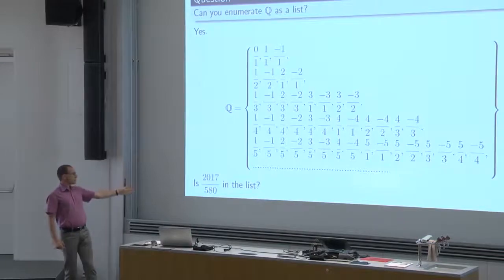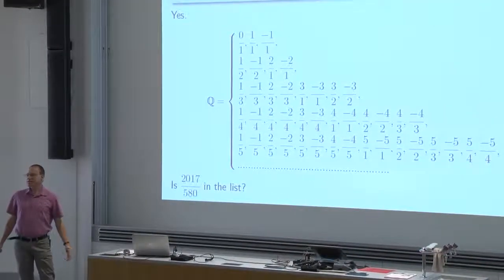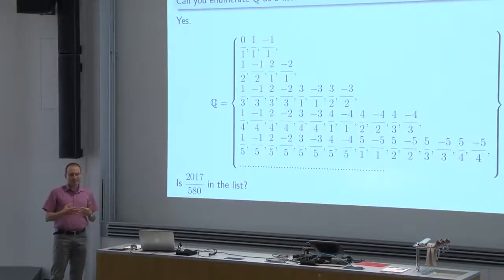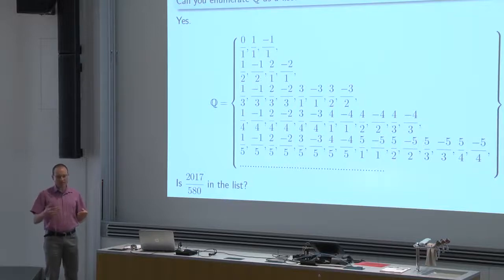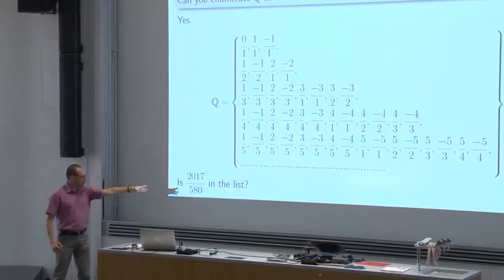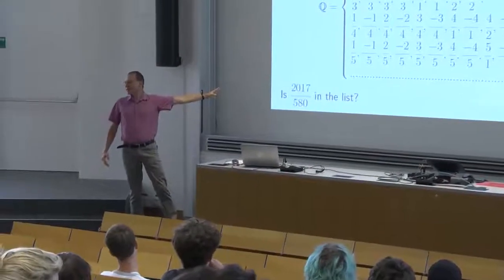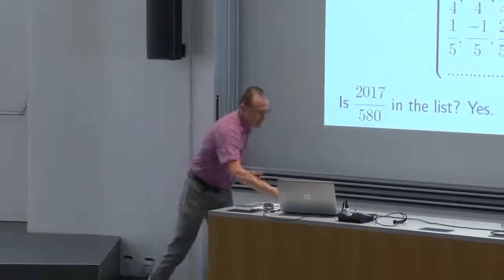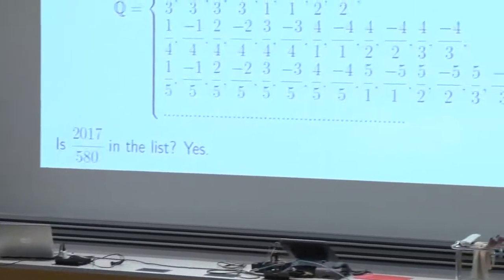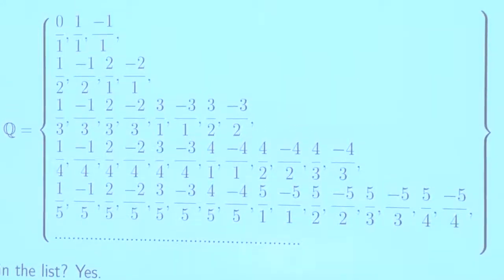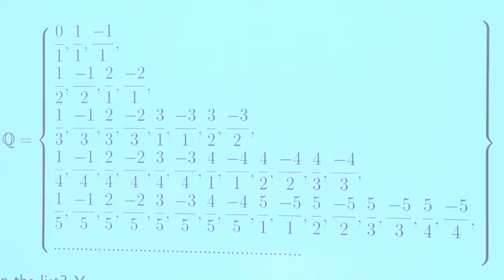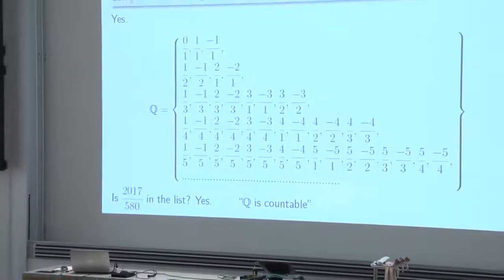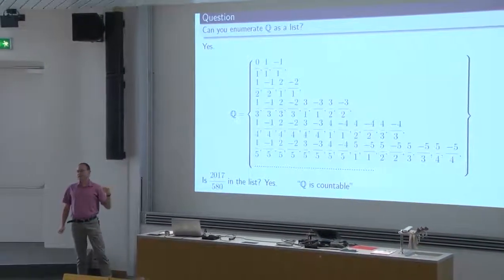Let's look at some pretty random rational number: 2017 over 580. Is it in the list? Yes, it is in the list. If you continue to the row with number 2017, you will see that number — it will appear on row number 2017. Every rational number will make it to the list. We have a very clear procedure, a step-by-step process of what rational number we put in this box every day, and every rational number will appear. We say that the set of rational numbers is countable.